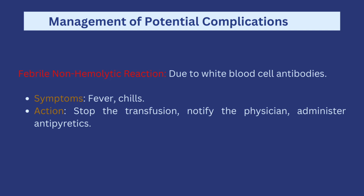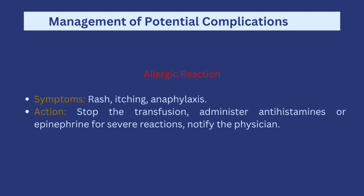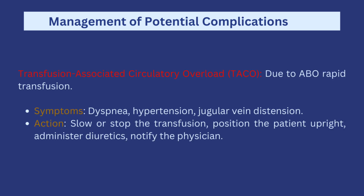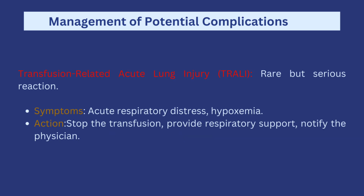Allergic reactions can present with symptoms like rash, itching, and anaphylaxis — a very serious reaction. Stop the transfusion, administer antihistamines or epinephrine if the reaction is severe, and notify the physician. TACO, which stands for transfusion-associated circulatory overload, occurs when blood is transfused at a very rapid rate. Symptoms include dyspnea, hypertension, and jugular vein distension. Actions include slowing or stopping the transfusion, repositioning the patient upright, administering prescribed diuretics, and notifying the physician.